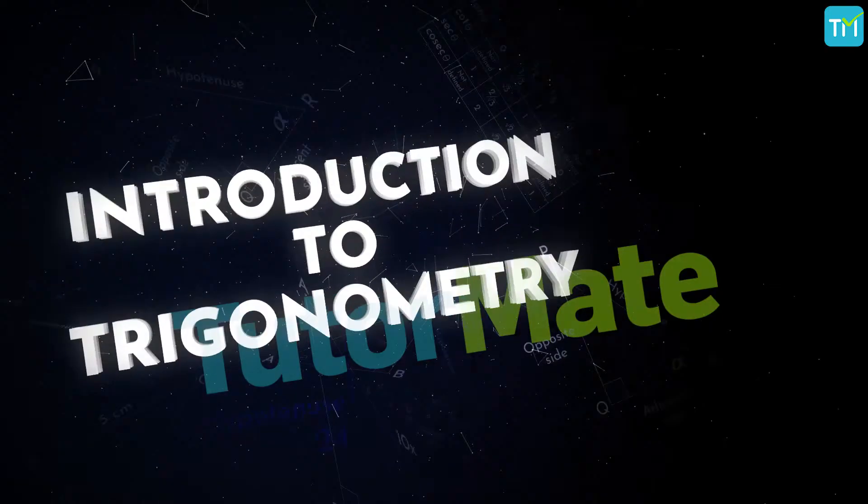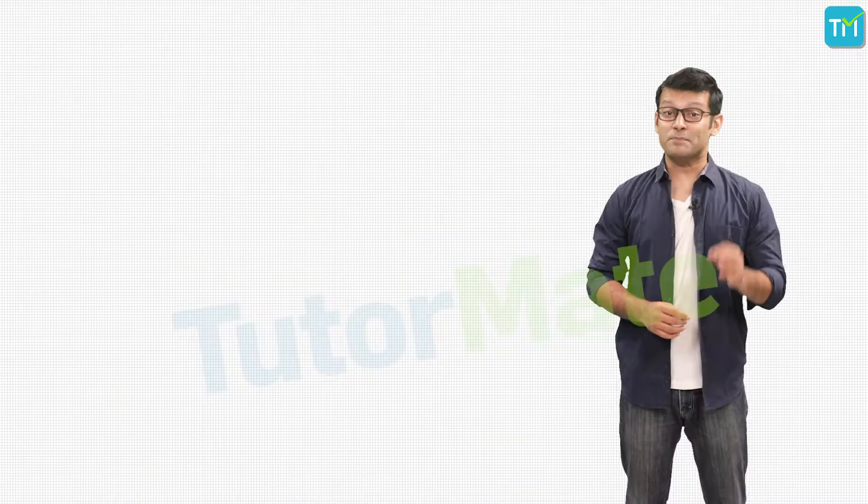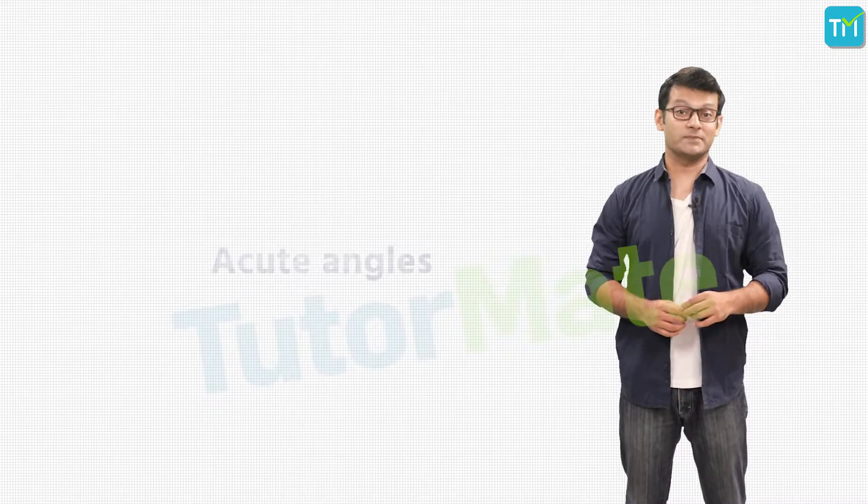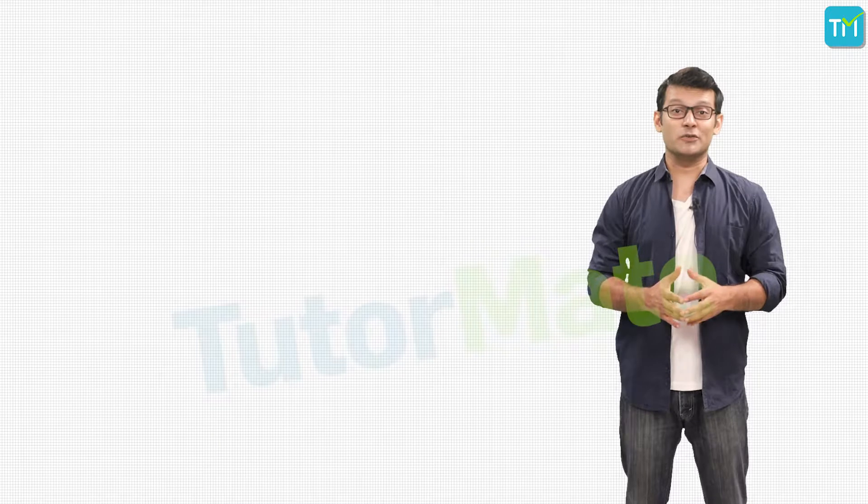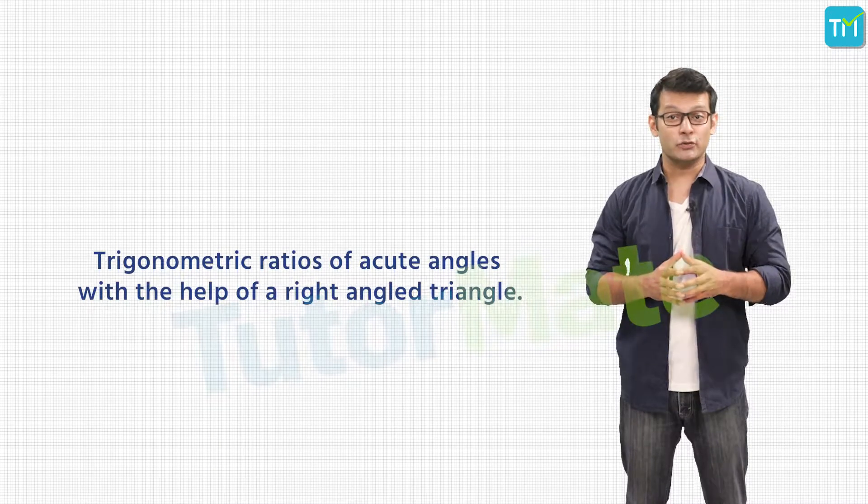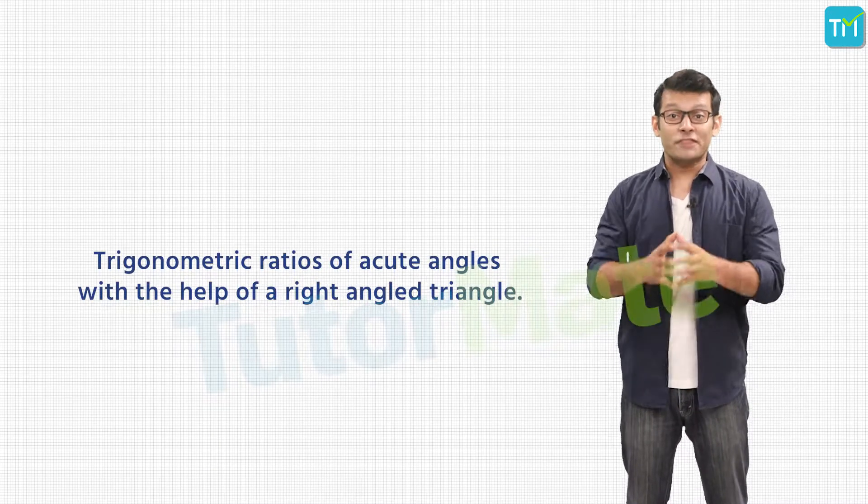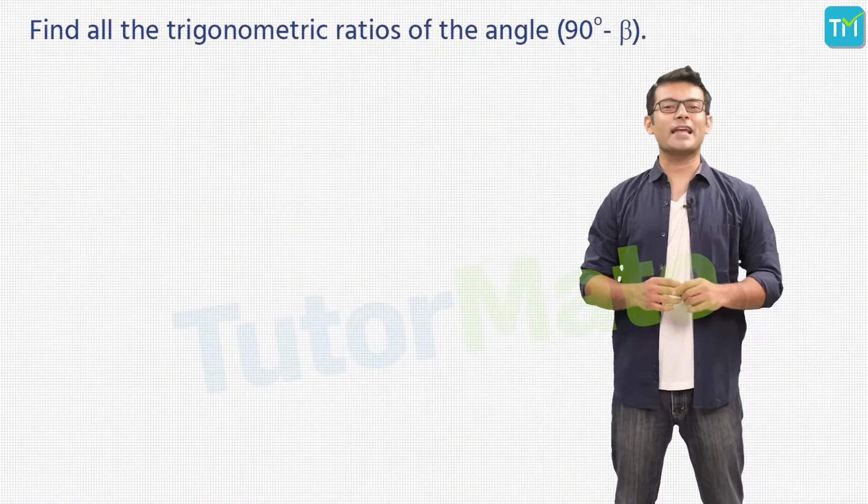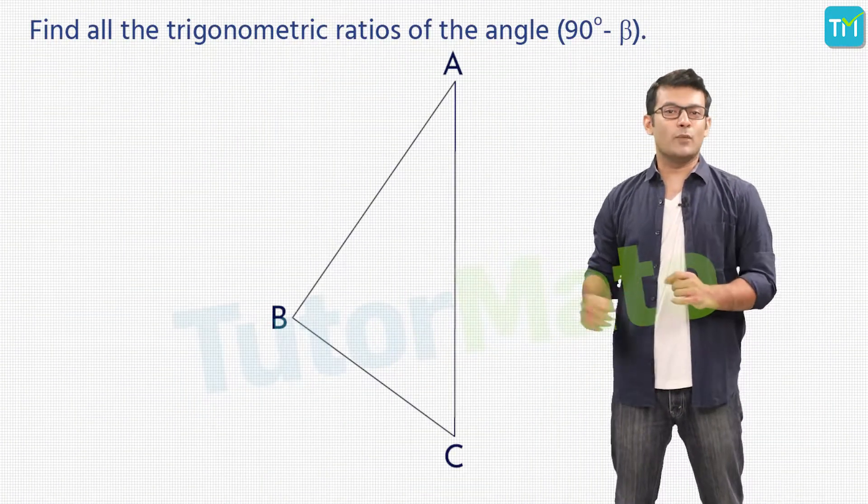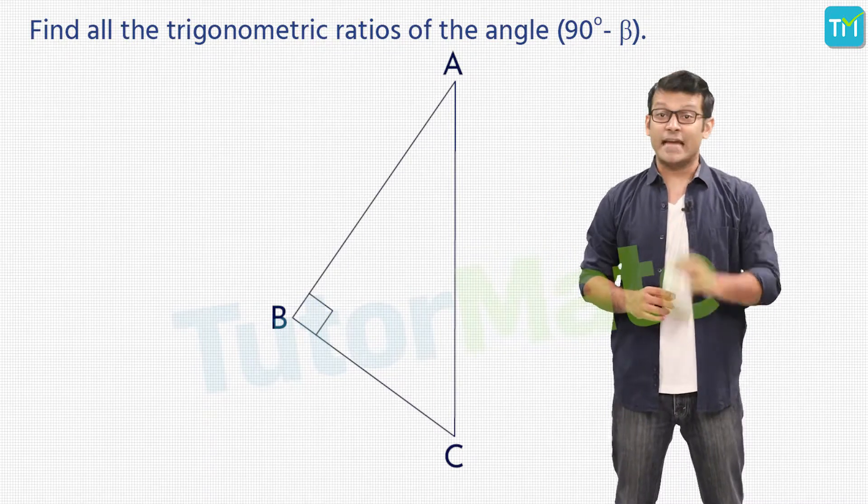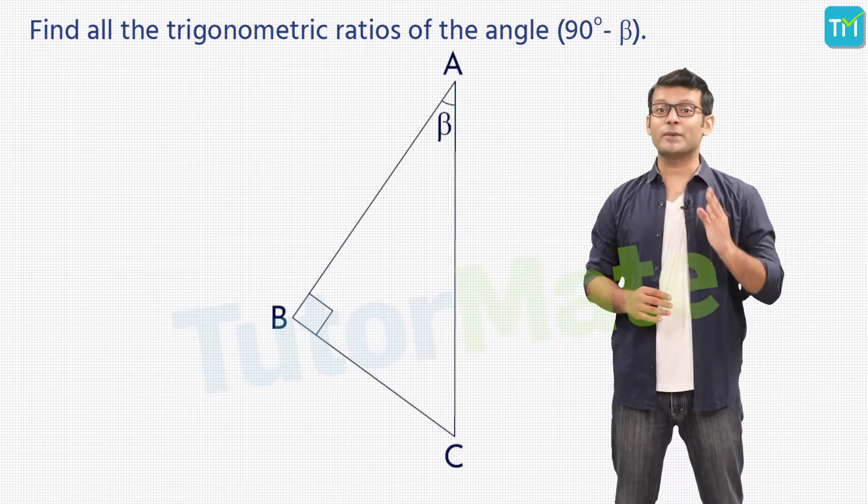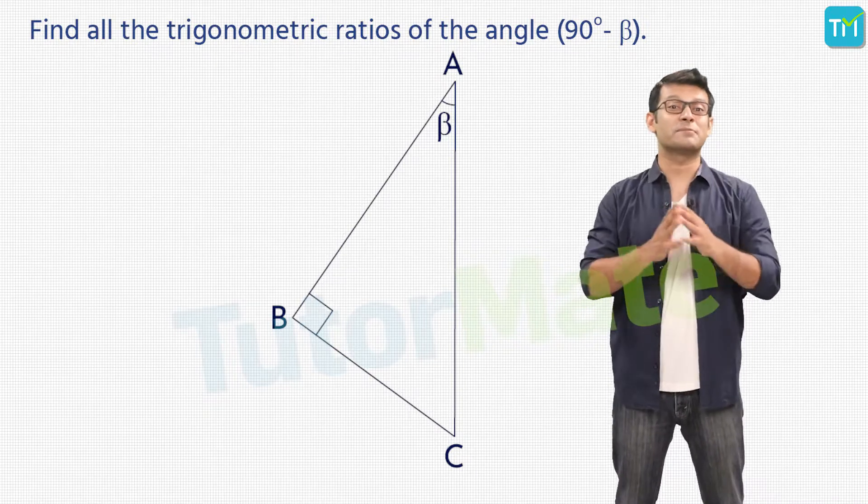And this is what is done by using trigonometry. So when we study basic trigonometry, we first deal with acute angles, and so in this chapter we will study trigonometric ratios of acute angles with the help of a right-angled triangle. We have right-angled triangle ABC where angle B is equal to 90 degrees, angle A is given as β, and we have to find the trigonometric ratios of (90° - β).